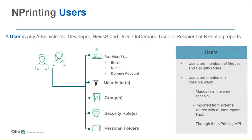Users in nPrinting are identified by their email, as well as a unique name. Those have to be unique per nPrinting user. We can also assign a domain account, which is useful in synchronizing security systems with SAML and JWT, but also for synchronizing with Qlik section access security. To augment the user's profile, we can link filters to users, so data views that they're able to see through the reports are hard-coded to specific filters.